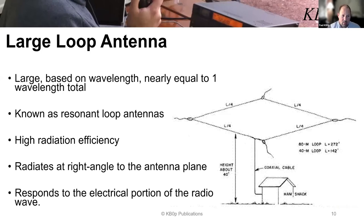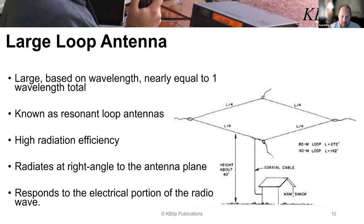A large loop antenna is known as a resonant loop because it is actually resonant at the frequency it's cut for. A large loop has high radiation efficiency — it propagates very well, gets out, people can hear you. What's interesting is a large loop will radiate at right angles to the antenna plane, though things will change as you raise the height — lobes start to develop.